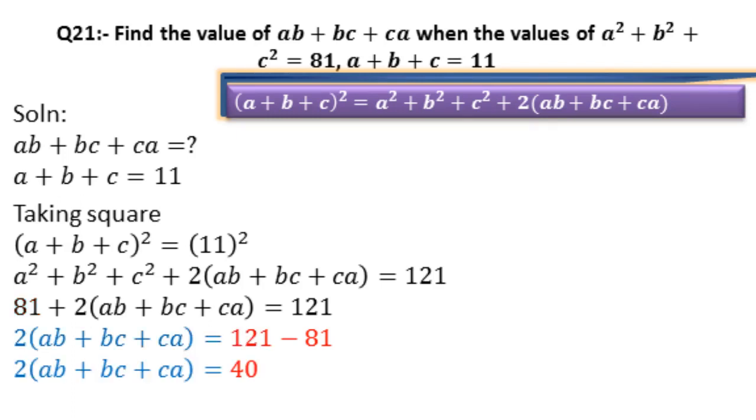2(ab + bc + ca) equals, comes as it is. Here 40 is obtained by subtracting 81 from 121. Next we will remove 2 by dividing it on both sides of this equation.